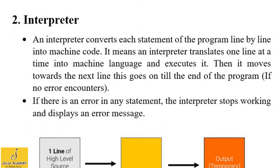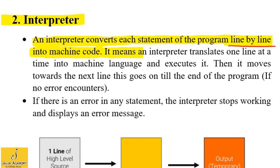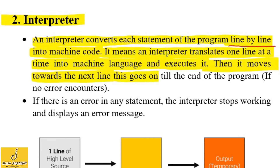Now let's discuss the second language translator: the interpreter. An interpreter converts each statement of a program line by line into machine code. Unlike the compiler, which converts the whole program in one step, the interpreter translates one line at a time into machine language and then executes it. Then it moves to the next line, and this continues till the end of the program, only if there is no error.